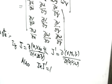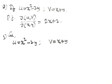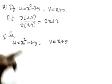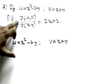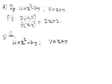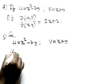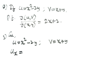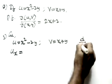Let's start with a small question to understand the concept. If u = x² - 2y and v = x + y, we have to find ∂(u,v)/∂(x,y) and show its value is 2x + 2. First, let's find ∂u/∂x and ∂u/∂y.